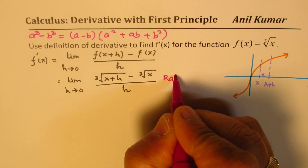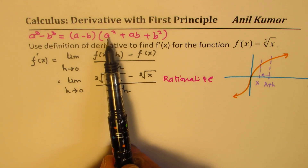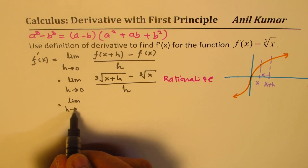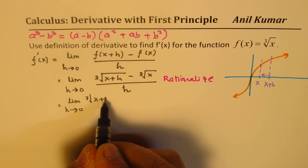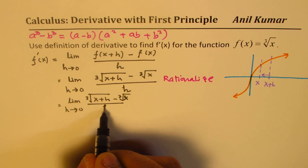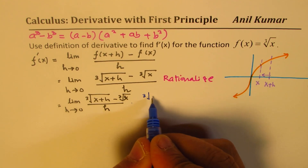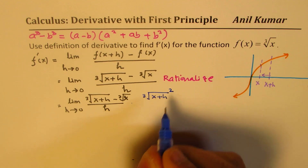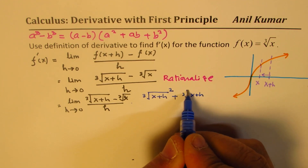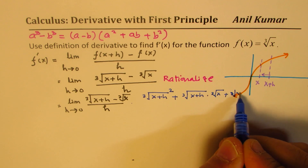So the next step is to rationalize. We'll multiply by a² + ab + b². So square of this term. We get: limit as h approaches 0 of [cube root of (x+h) minus cube root of x] over h. Now let's rationalize: we have the square of the first term, so we get (∛(x+h))², plus the product of the two terms, that means ∛(x+h) times ∛x, plus the square of the second term, which is (∛x)².